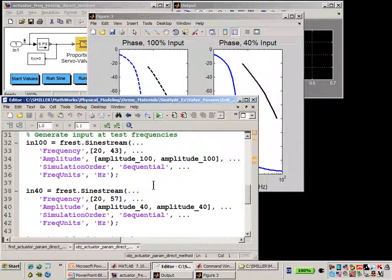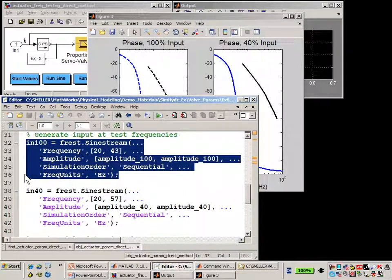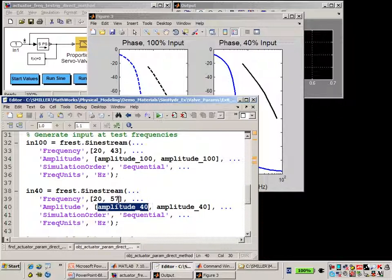In this objective function, this is what fmincon is going to execute each time. You can see that we're generating the test frequencies. So we're going to test the actuator at 100% signal at two different frequencies and then at 40% signal at two additional frequencies. These are the four points that we're going to compare in the objective function.